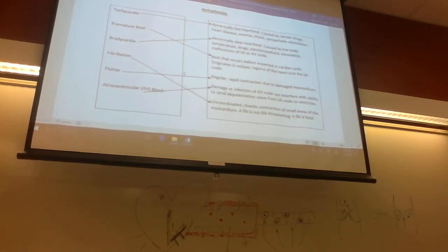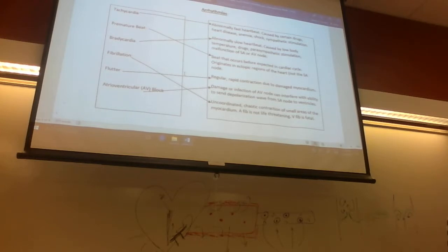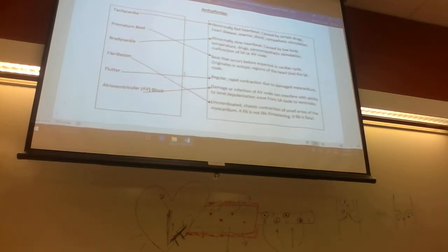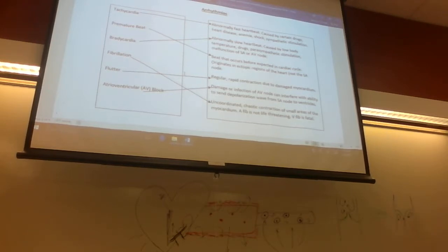A premature heartbeat is a beat that occurs before the expected cardiac cycle, originating in ectopic regions of the heart. Normally the SA node fires and your heart beats, but a premature beat happens when the heart beats before the SA node has a chance to fire. We don't want premature beats because we want our hearts to relax so they can fill up with blood — premature beats prevent that.